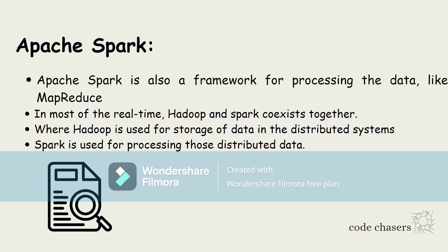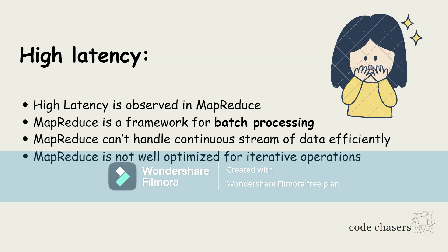You might ask: we said Hadoop is used along with MapReduce where MapReduce handles processing, so why use Spark instead? Here is the answer. MapReduce has high latency — processing a huge amount of data is slow in MapReduce.